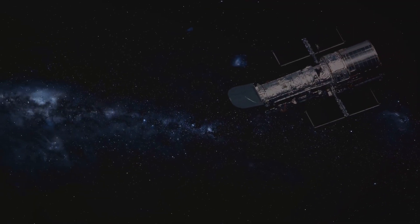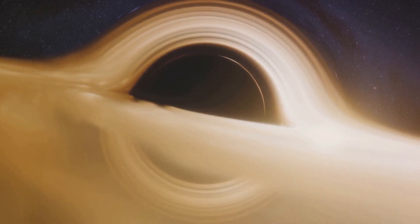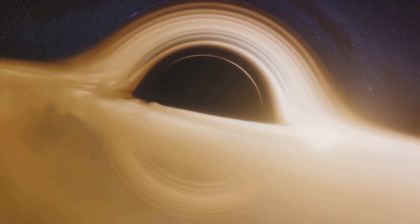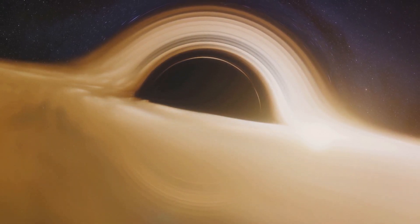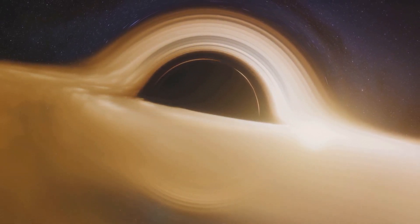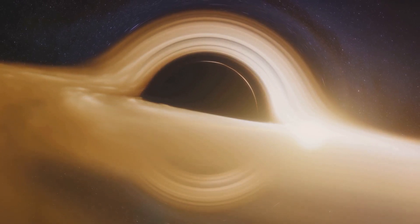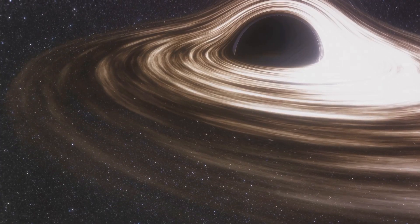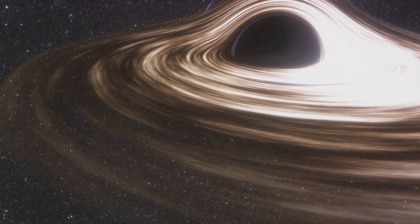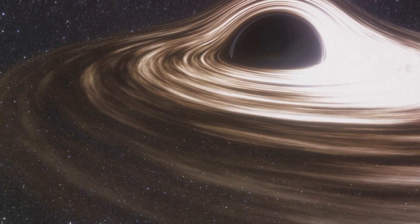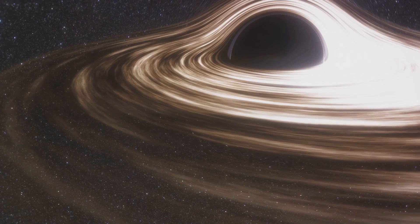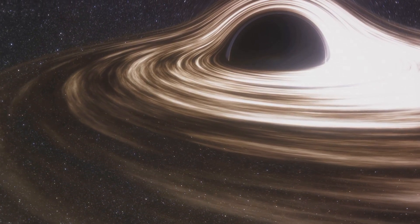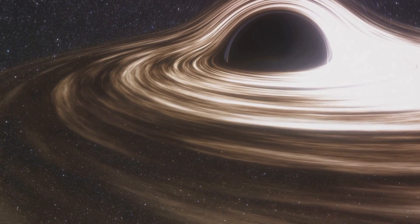Capturing an image of Sagittarius A is not just about capturing an extraordinary image, it's about testing the very limits of our understanding of the universe. Black holes, like Sagittarius A asterisk, are laboratories of extreme physics, places where space and time are warped to their limits. The EHT is providing us with a unique opportunity to test Einstein's general theory of relativity under these extreme conditions.